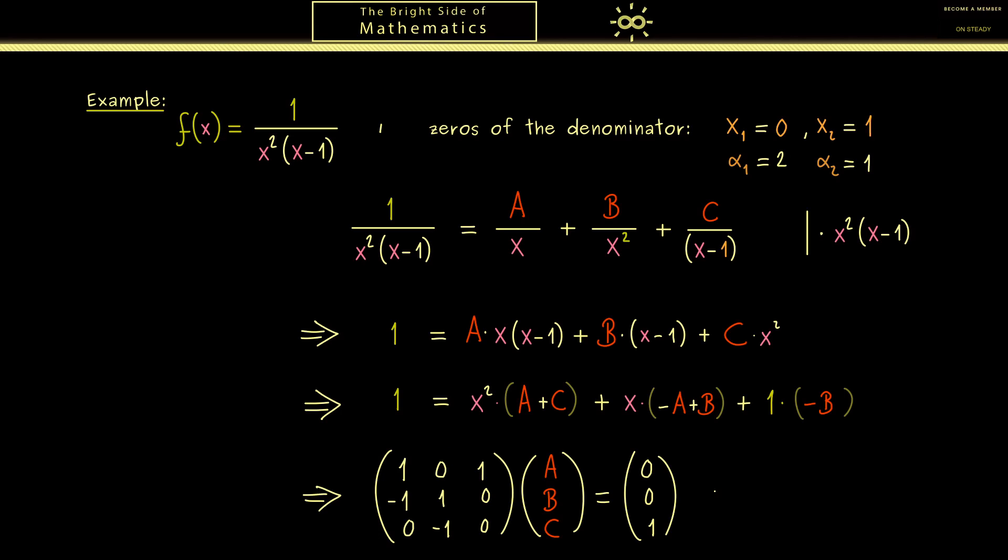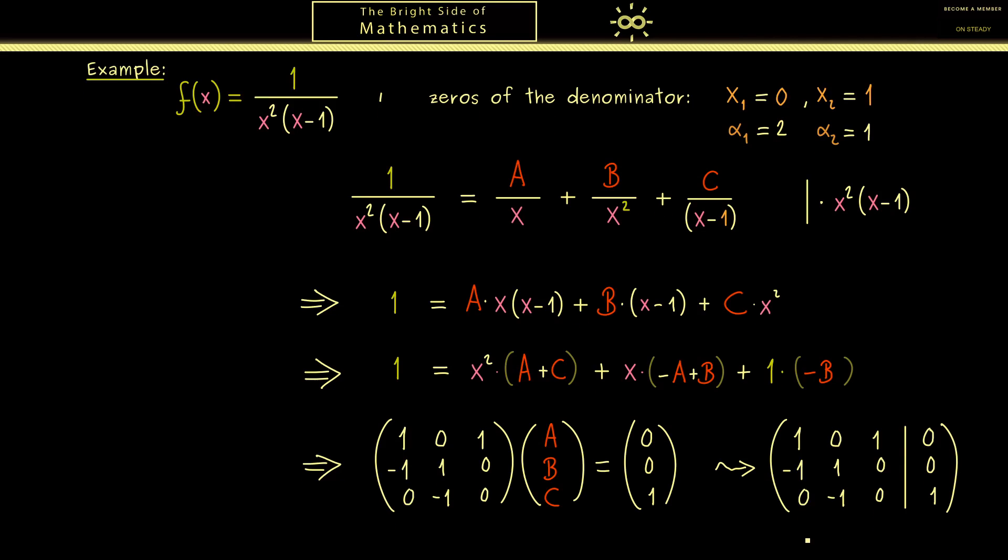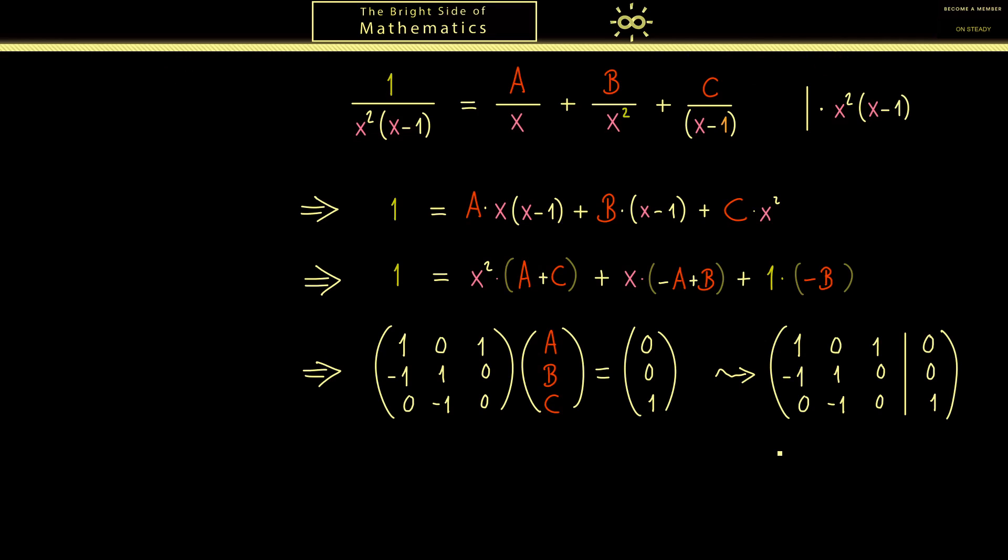Now if you know linear algebra you know we can write this in a short form. We only use the matrix and the right hand side comes in as well. Now solving such a system of linear equations just means bringing this matrix to a row echelon form. More precisely this means we want to generate zeros here.